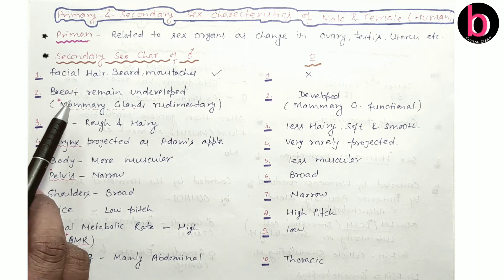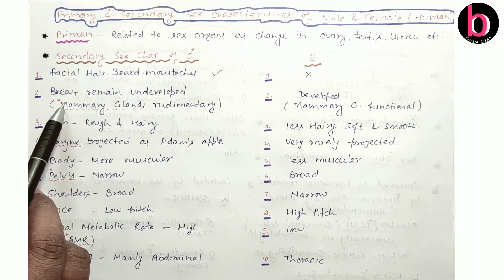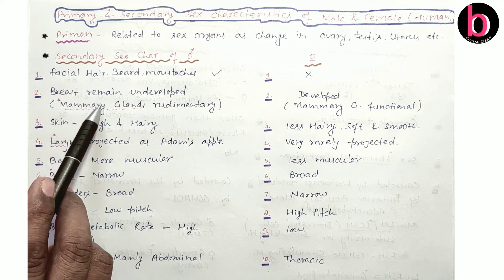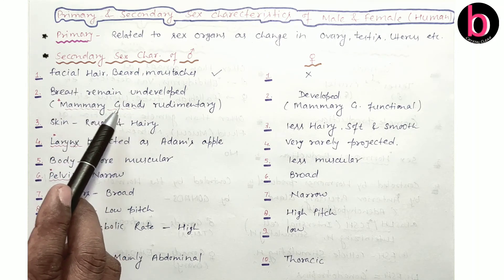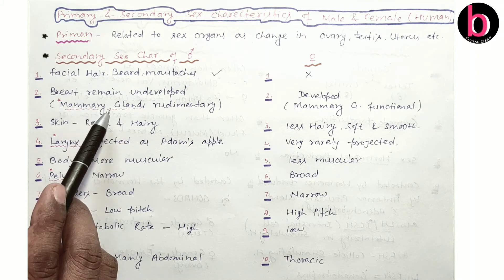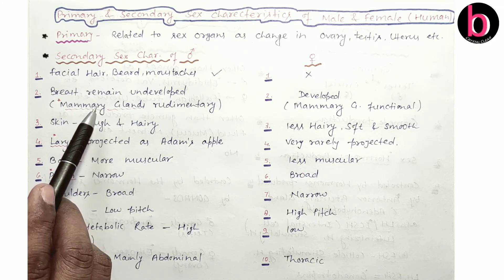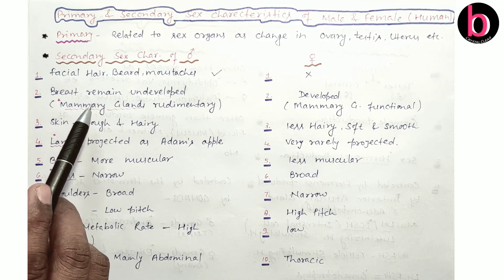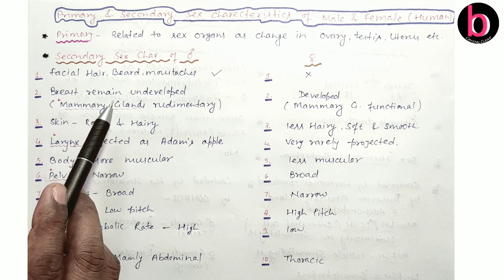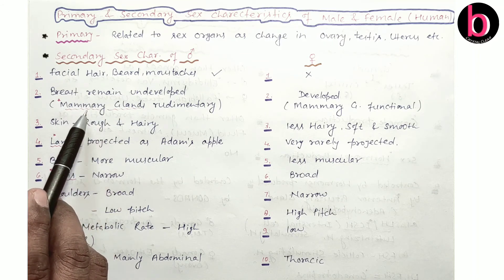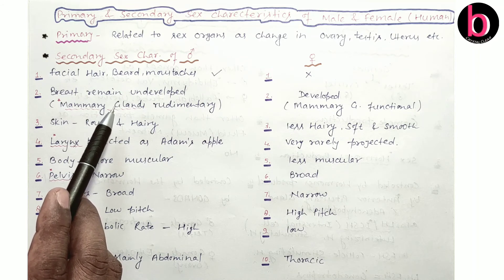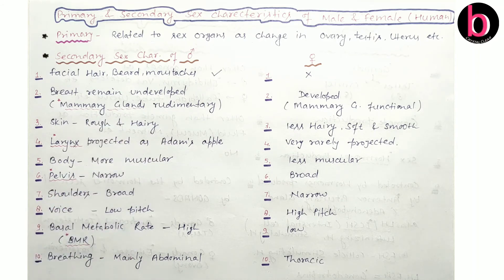Next secondary sexual character of male: they have undeveloped breasts, because of rudimentary mammary glands. Mammary glands are milk-producing glands, a characteristic feature of mammals, and human beings are one of them. So in males, the breast is undeveloped because of rudimentary mammary glands. While in females, the breast is developed because of functional mammary glands.